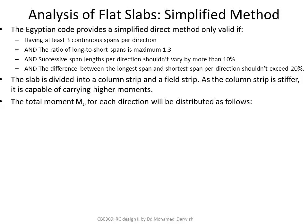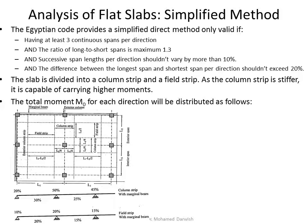The slab is divided into a column strip and a field strip. The column strip is stiffer and more capable of carrying higher moments. The total moment M₀ for each direction is distributed between them. When comparing the percentage of moment in the column strip versus the field strip — with marginal beams — you notice the column strip carries a higher proportion because it is stiffer.